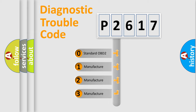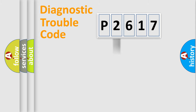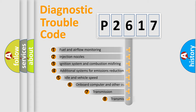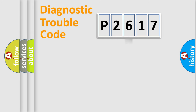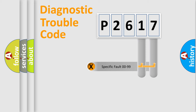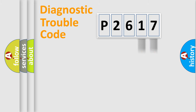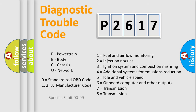If the second character is expressed as zero, it is a standardized error. In the case of numbers 1, 2, or 3, it is a manufacturer-specific error expression. The third character specifies a subset of errors. This distribution is valid only for the standardized DTC code. Only the last two characters define the specific fault of the group, and this division is valid only when the second character is zero.